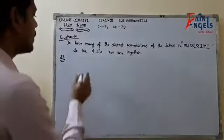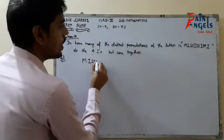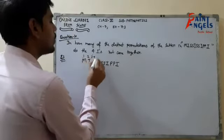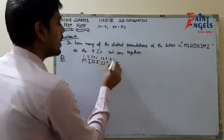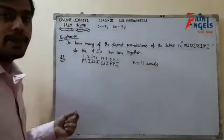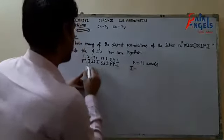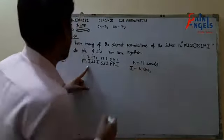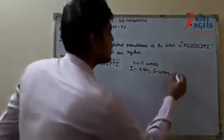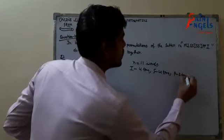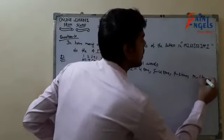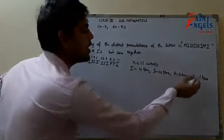The word MISSISSIPPI has the letters M, I, S, S, I, S, S, I, P, P, I — total N = 11 letters. The letter I comes 4 times, S comes 4 times, P comes 2 times, and M comes 1 time. Using the formula for permutations with repetition: total arrangements = N! / (p1! × p2! × ...), so total = 11! / (4! × 4! × 2!) = 34,650.